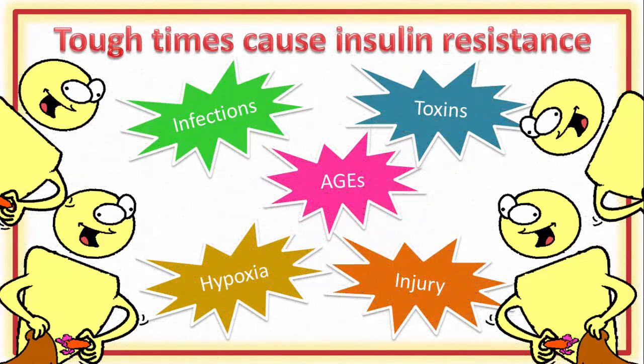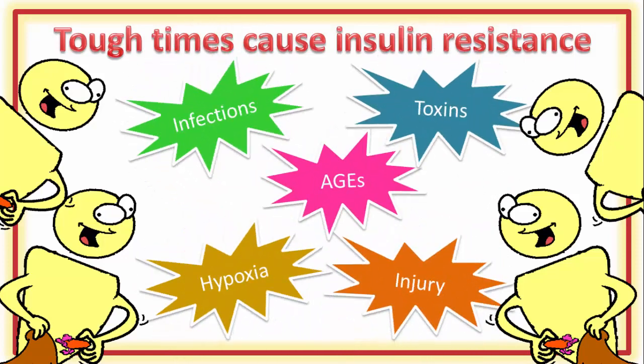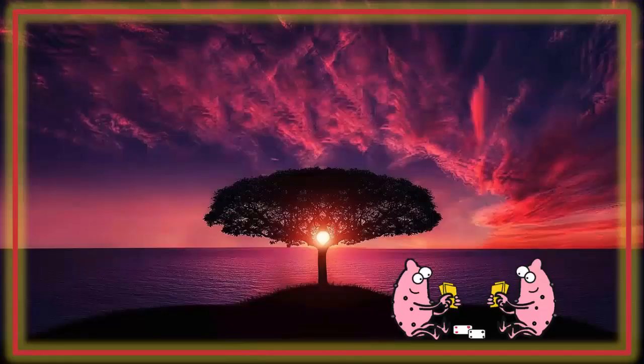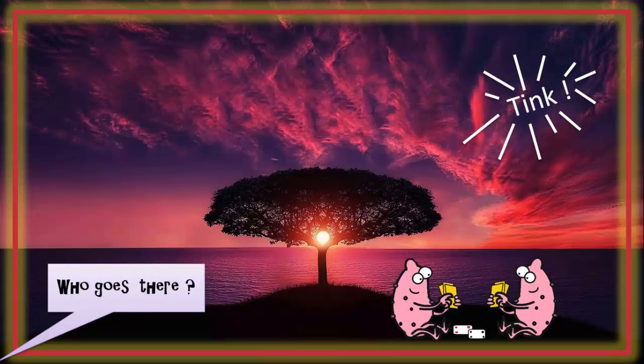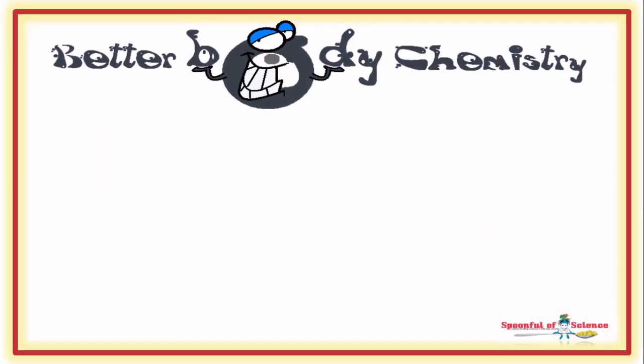To help insulin make those deliveries, you want to do what you can to fix these. The adjustable threshold hypothesis suggests the solution to insulin resistance begins with a quiet life. So do what you can to live a quiet life and create BETTER BODY CHEMISTRY.